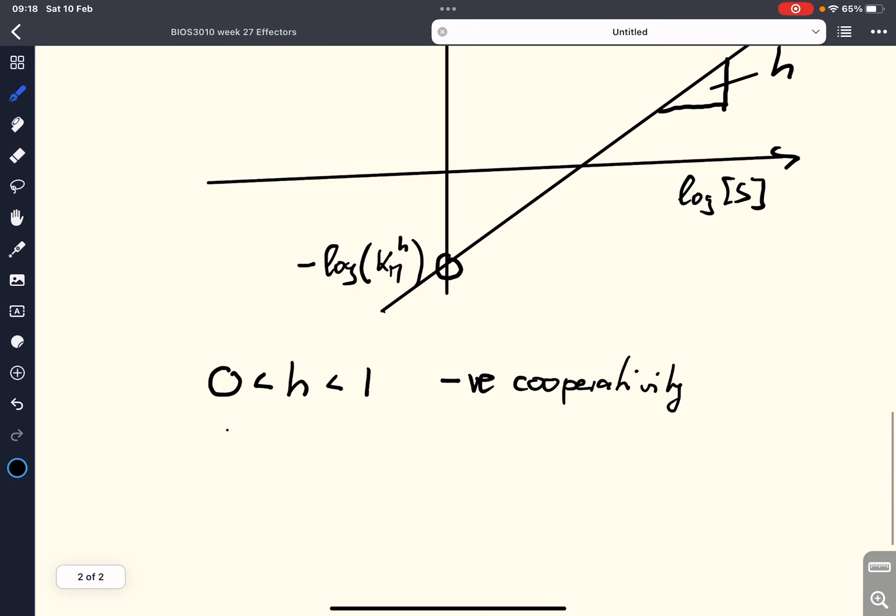If the Hill coefficient is exactly one, then we have a typical Michaelis-Menten enzyme. And if the Hill coefficient is larger than one, then we have positive cooperativity.